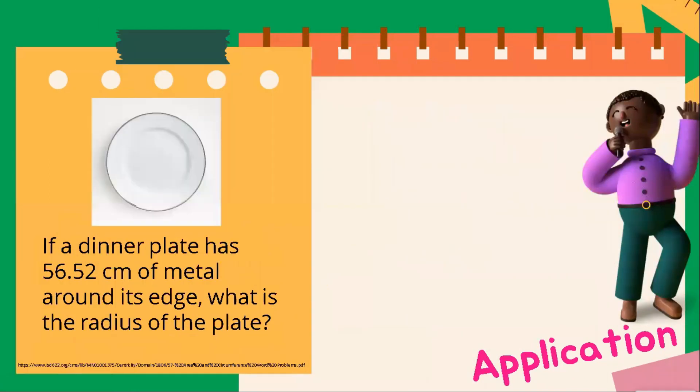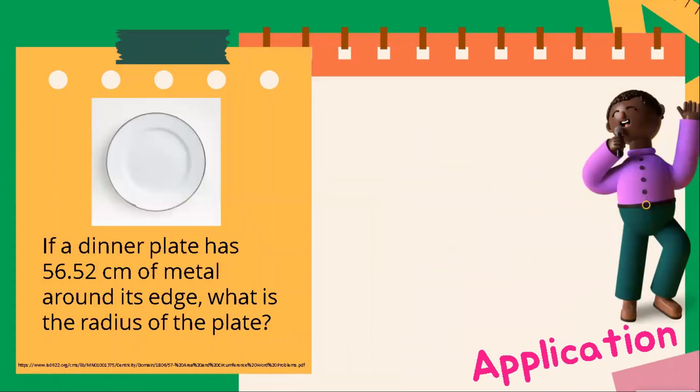This time, let's now proceed to the last word problem under the application part. If a dinner plate has 56.52 centimeters of metal around its edge, what is the radius of the plate? This word problem is asking us to solve for the radius of the plate, wherein the circumference of the plate is already provided.